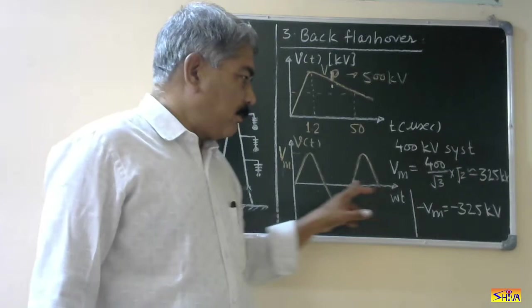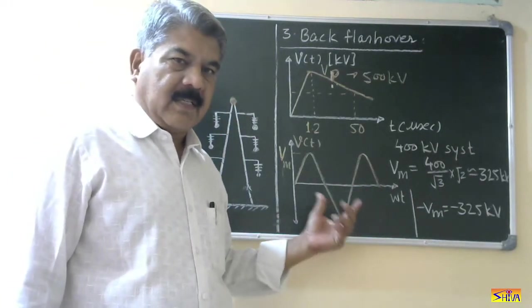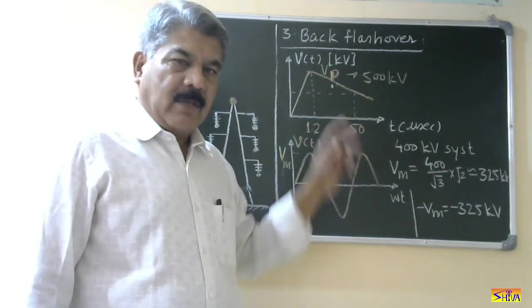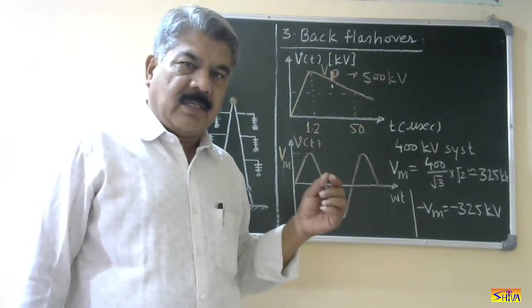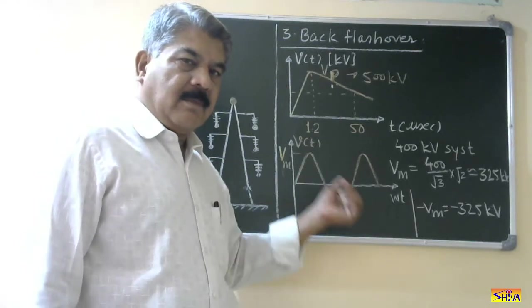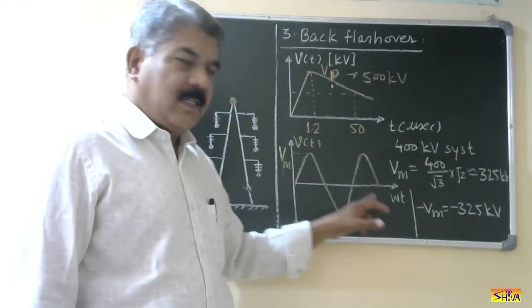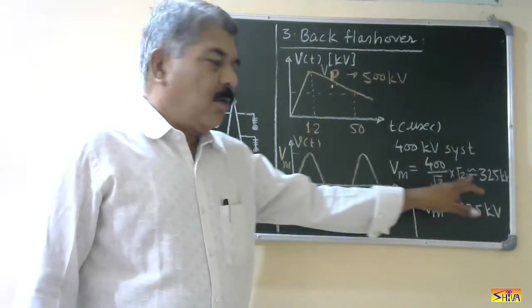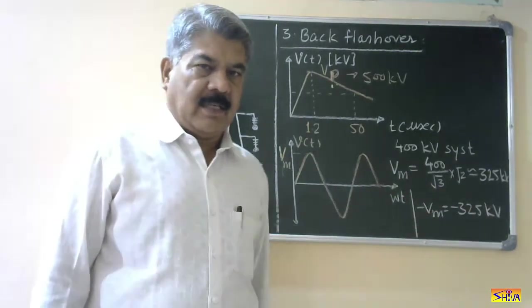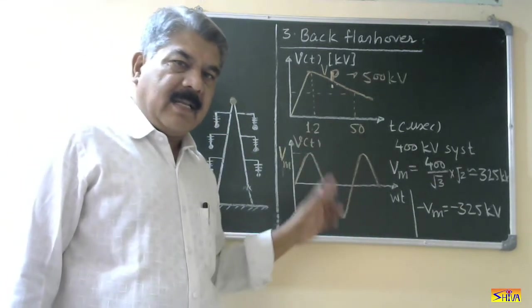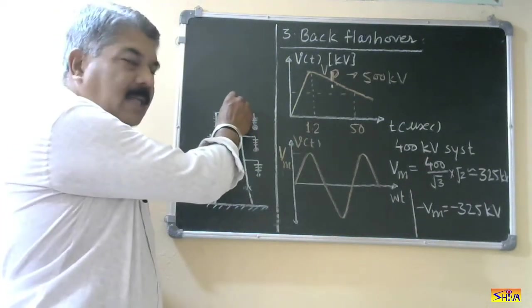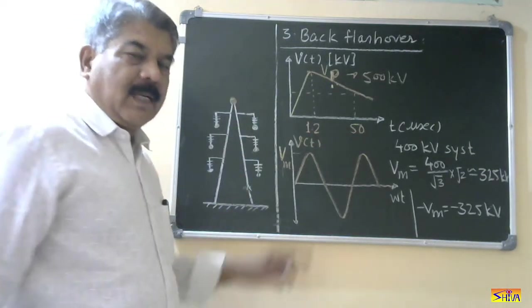Now suppose, now please remember that this one cycle is of 20 milliseconds, half cycle is of 10 milliseconds. So this scale is in milliseconds whereas this scale is in microseconds. So if we consider this lightning phenomena, that will be just on an instant of this sinusoidal waveform. Because it is in milliseconds, it is in microseconds. So peak value, positive peak value of this waveform is 325 kV, negative peak value is minus 325 kV. Now this overvoltage can come at any instant in this complete cycle. Now when this overvoltage comes, this entire tower top, this tower is subjected to 500 kV.